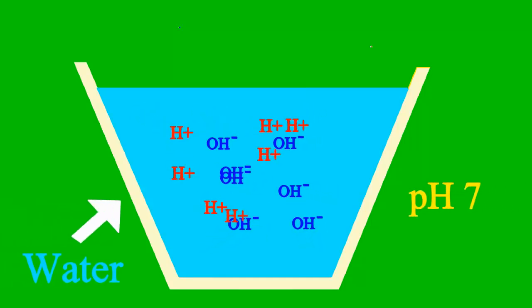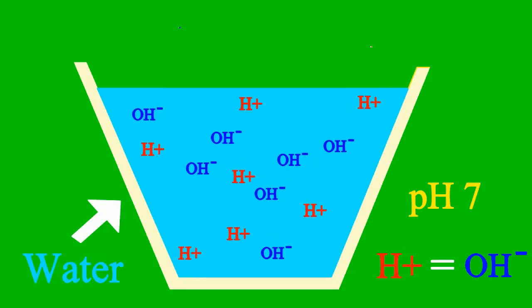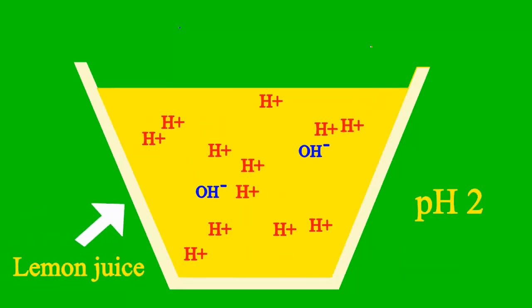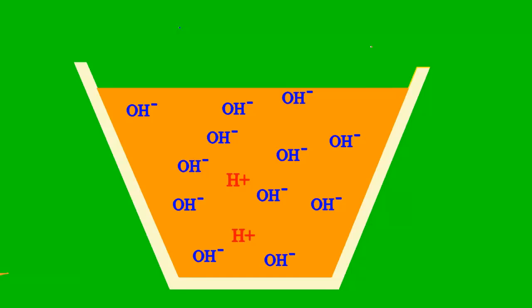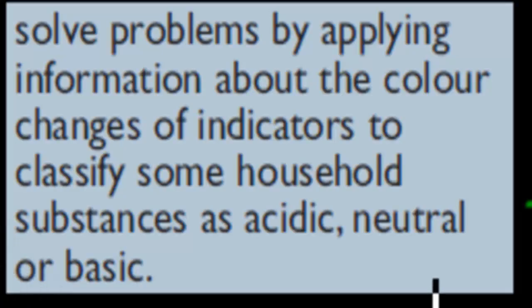When the pH is 7, then it's a case where the sample is neither an acid nor base. But less than 7, it's an acid, we say more than 7, it's a base all the way. Welcome back. In the last video, we talked about an experiment you've done in class when it comes to looking at color changes of different indicators.